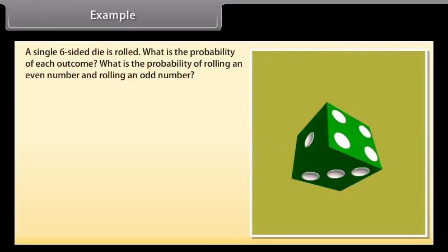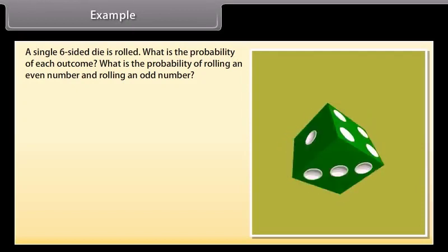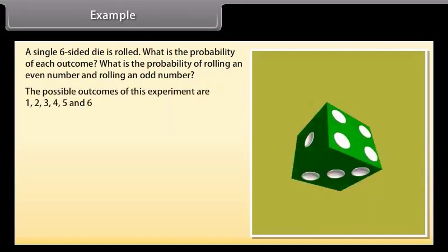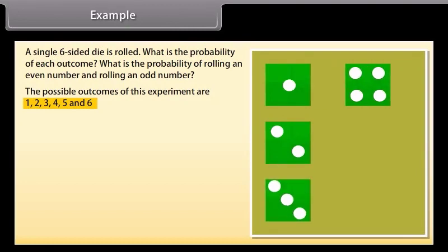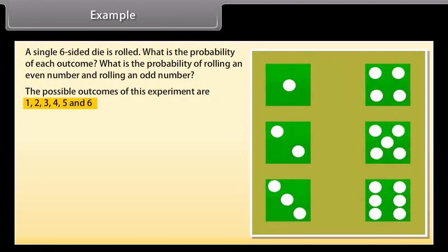A single six-sided dice is rolled. What is the probability of each outcome? What is the probability of rolling an even number and rolling an odd number? The possible outcomes of this experiment are 1, 2, 3, 4, 5, and 6.